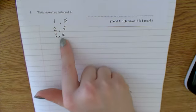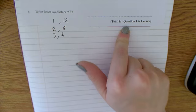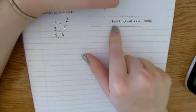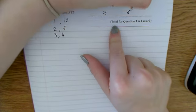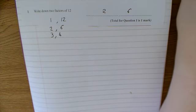So then you just need to write down any of these two here for one mark. So I'm going to write down 2 and 6. But any two of those options would get you the mark.